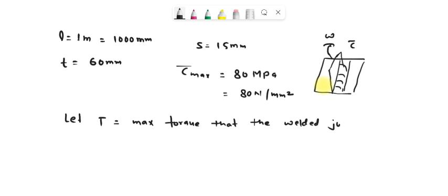We know that the maximum shear stress is given by tau maximum equals 4.242 T divided by s L squared. Now substitute the values: tau maximum, that is 80, equals 4.242 T divided by s, that is 15 millimeters, and L, that is 1000 millimeters, whole squared.